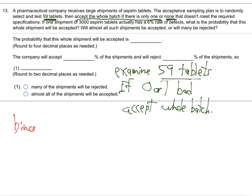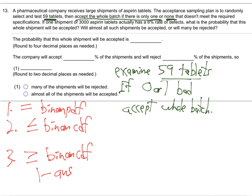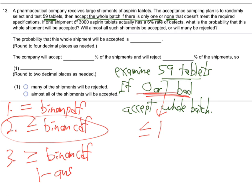We're going to use the binomial CDF. Remember the three different versions: if it's equal, you use binomial PDF; if it's less than or equal, you use binomial CDF; and if it's greater than or equal to, you use binomial CDF and then one minus the answer at the end. On this one, you want zero or one bad tablets — that's less than or equal to one — so that's case two.